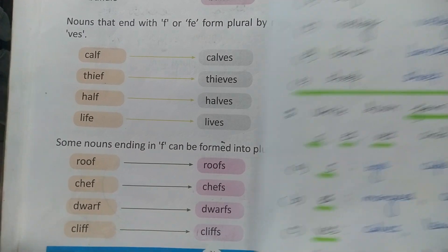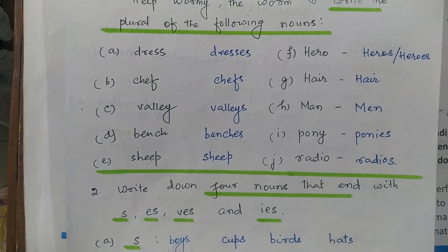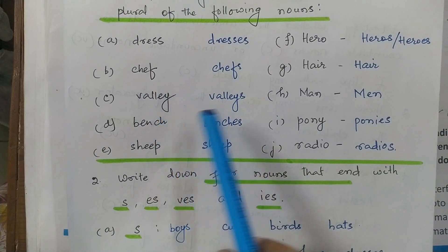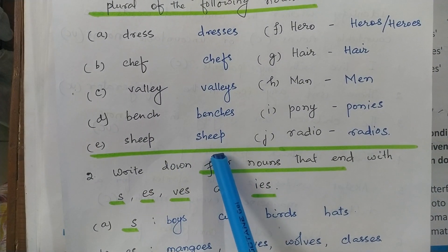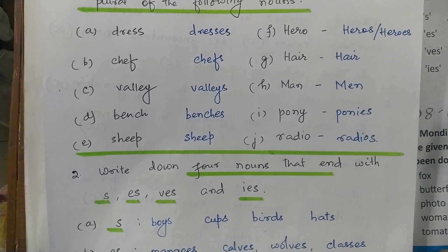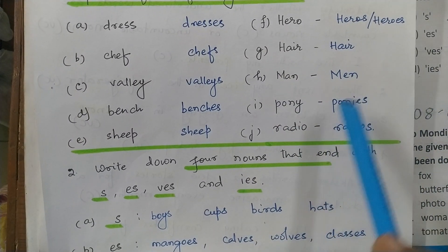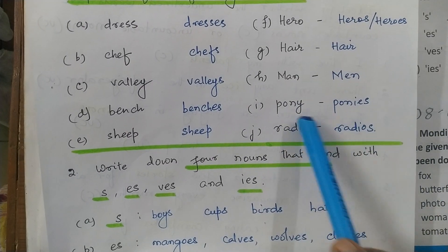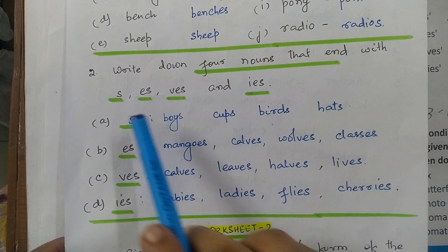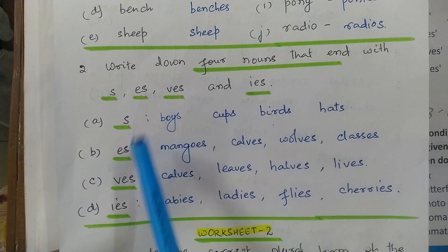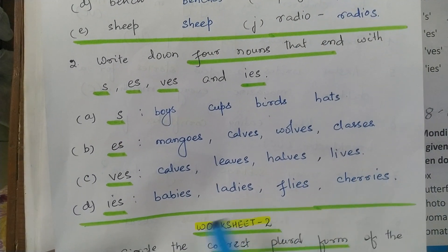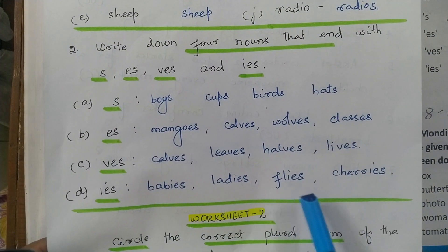Now we will do an exercise from Worksheet 1. Help Wormy the Worm write the plural of the following nouns. Dress becomes dresses, chef becomes chefs, valley becomes valleys, bench becomes benches, sheep remains sheep, hero becomes heroes, hair is uncountable and remains hair, man becomes men, pony — ending with Y preceded by consonant — becomes ponies, radio becomes radios. Write four nouns: plurals with S: boys, cups, birds, hats. With ES: mangoes, calves, wolves, classes. With VES: calves, leaves, halves, lives. With IES: babies, ladies, flies, cherries.